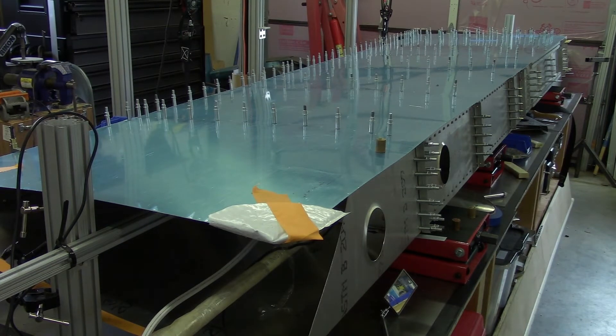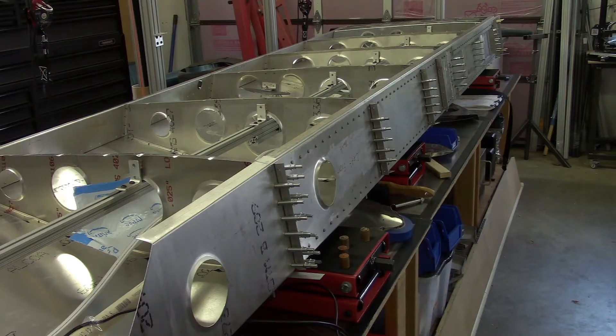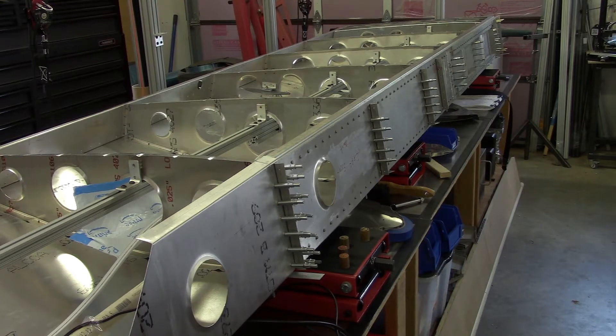The first step will be to pull the wing skin off and get a better idea of how things are set up internally. I'll cover some of the things that are different compared to what I had before when I was doing the top skin.